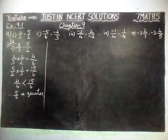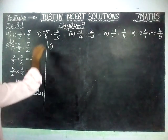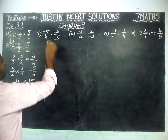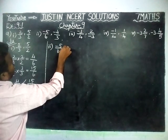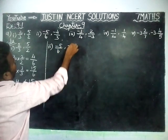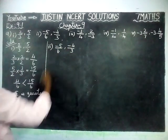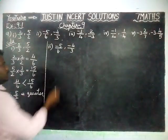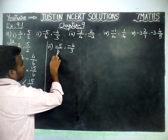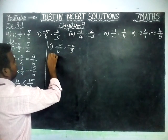Next, we are going to solve the second question. The second question is -5/6 and -4/3. Here also, denominators are different, so we are going to convert into equal denominators. Since 6 is already there, we are going to convert only -4/3.